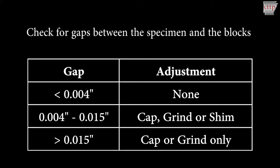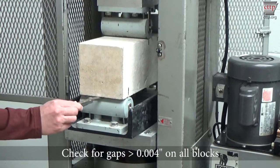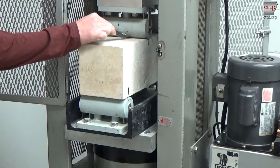If a gap is greater than 0.015 inches, it must be corrected by capping or grinding the beam. Check for gaps greater than 0.004 inches over a length of at least 1 inch. Check this for all blocks.